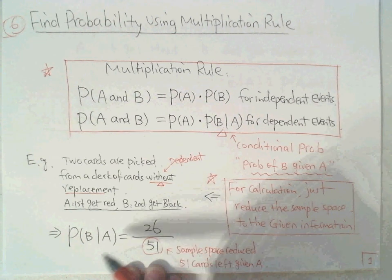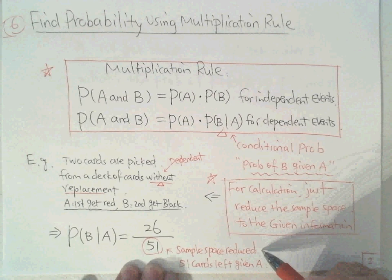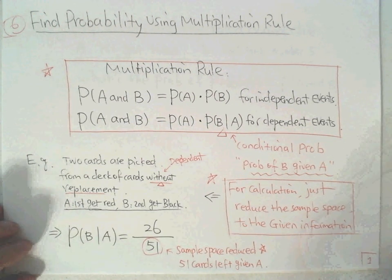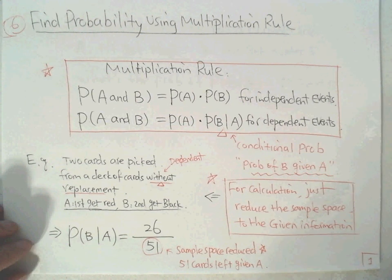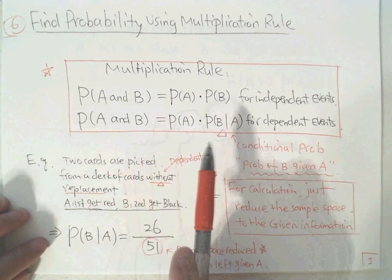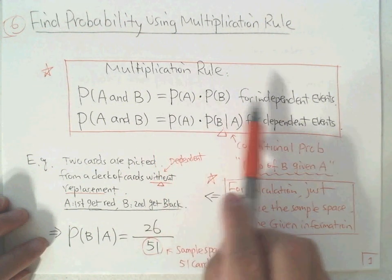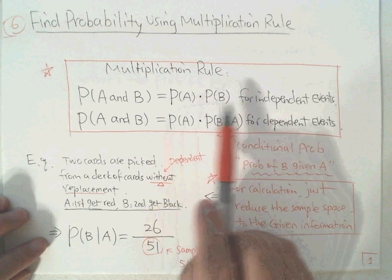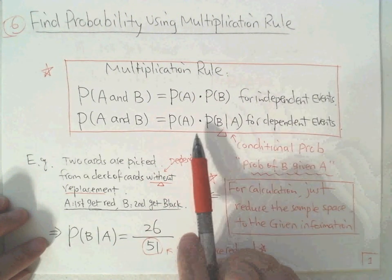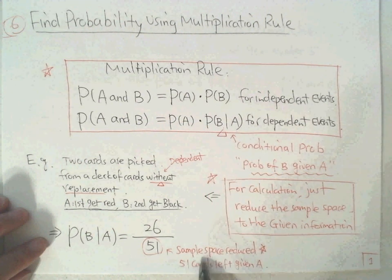The major takeaway: always reduce the sample space for conditional probability. No matter which case, always multiply. If you determine it's a dependent case, be sure to use conditional probability, which means reduce the sample space.